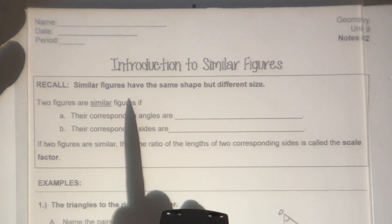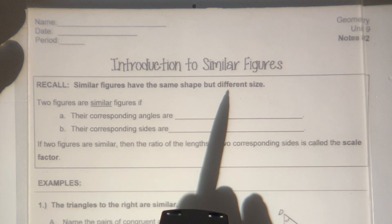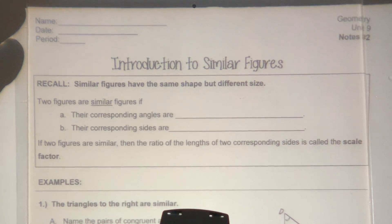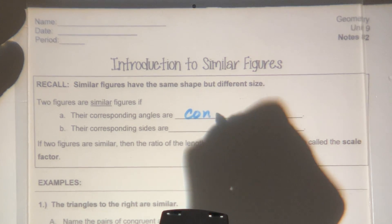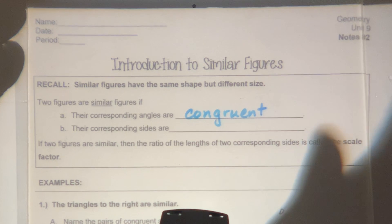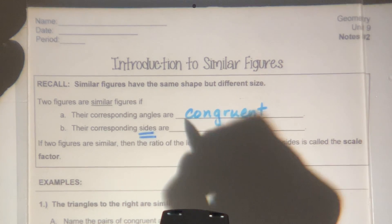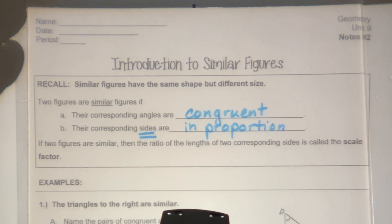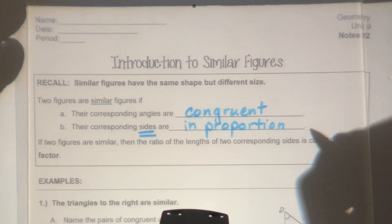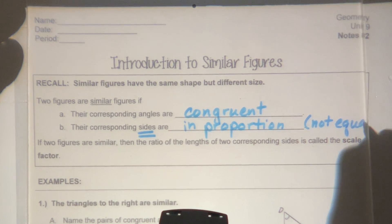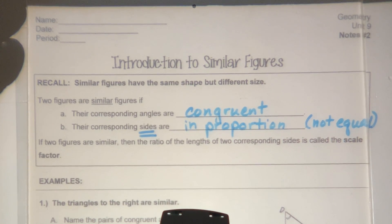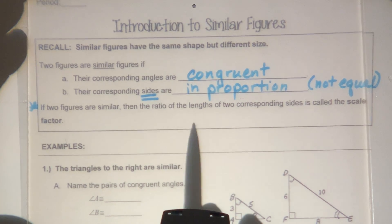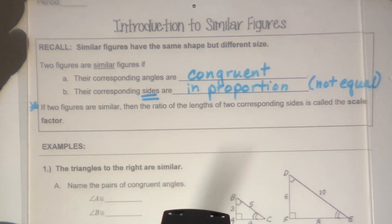As a recall from dilations, similar figures have the same shape but different size. Two figures are similar if their corresponding angles are congruent. However, their corresponding sides are in proportion — meaning the sides will not be equal. But you can get one side if you know the first side and the scale factor. Two figures are similar when the ratio of the lengths of corresponding sides is called the scale factor.